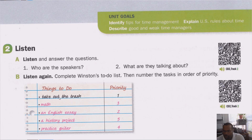If you've taken some time to list those things on his to-do list, let's see what the answers are. Number one is done for us: his number one priority is to take out the trash. His number two priority is to write an English essay. His number three priority — the third most important thing — is to do his math work, probably his math homework. Number four is something he really likes to do, which is practice the guitar. And number five: he has to write a history project.